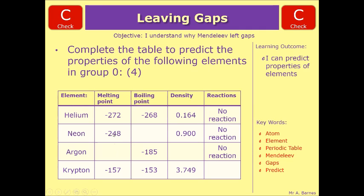So if we're looking at neon, anything in between minus 248 and minus 157 will be acceptable. The exact one is minus 189. Same with the boiling point, between 185 and 268, you're looking around 240, so it's minus 246.